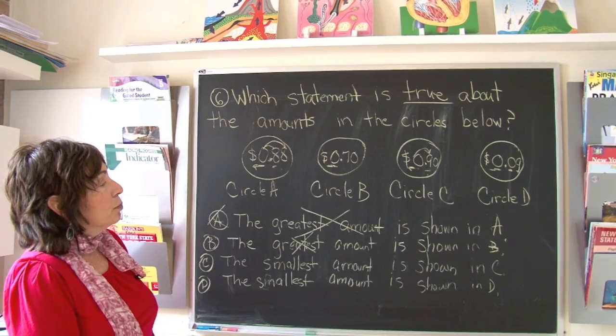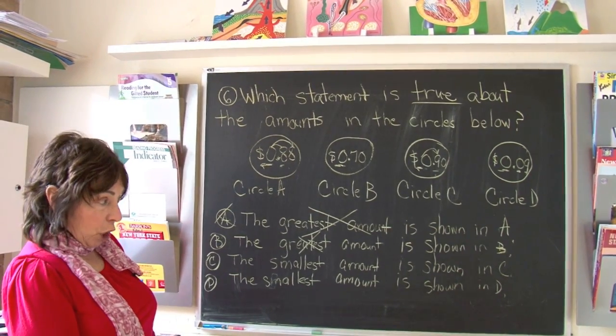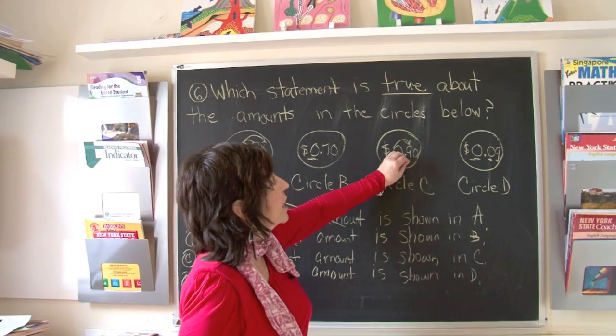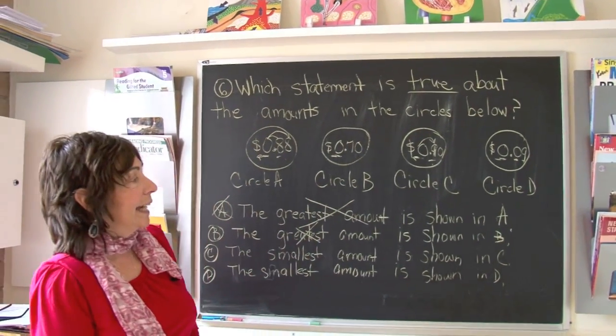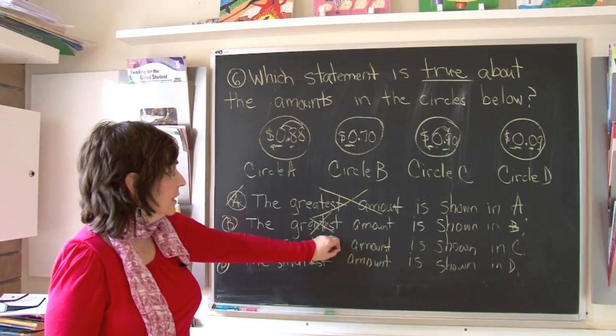C. The smallest amount is shown in circle C. Boys and girls, this is clearly the largest amount. Nine tenths, or ninety cents. That is not correct.